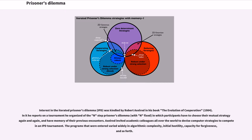Interest in the Iterated Prisoner's Dilemma was kindled by Robert Axelrod in his book The Evolution of Cooperation. In it he reports on a tournament he organized of the iterated Prisoner's Dilemma in which participants have to choose their mutual strategy again and again, and have memory of their previous encounters. Axelrod invited academic colleagues all over the world to devise computer strategies to compete in an IPD tournament.